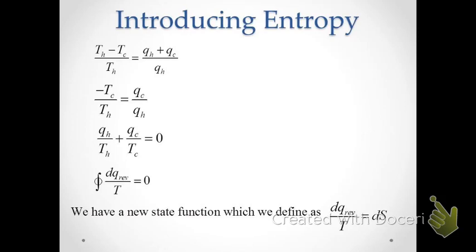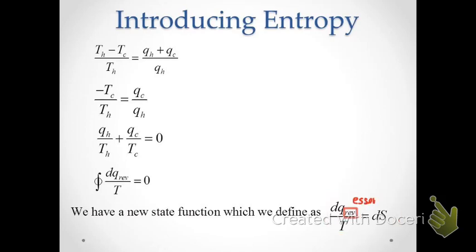This is how we arrive at the definition of entropy: dS = dQ_rev/T. The subscript 'rev' is essential because Q is path-dependent — unlike state functions such as internal energy or enthalpy, Q and W are not functions of state and depend on path. We must always use a reversible path when calculating entropy changes. How we calculate entropy changes for various processes will be the subject of the next video.